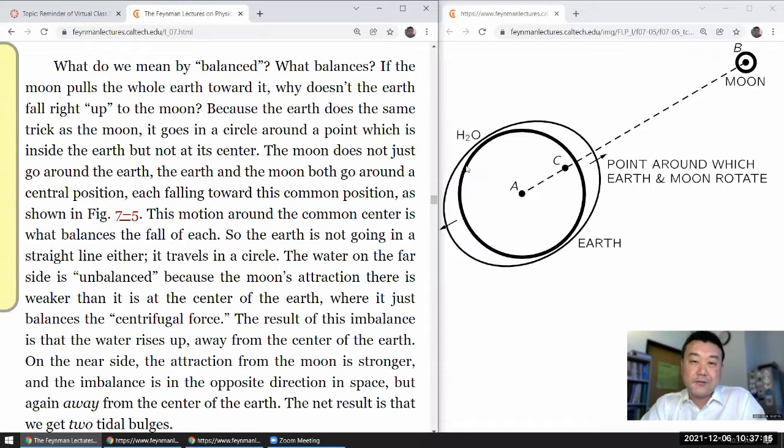Furthermore, the water can flow while the more rigid Earth cannot. The true picture is the combination of these two things. So you have a bulge on the closer side and the farther side. So as the Earth rotates, one cycle every 12 hours or so. What do we mean by balance? What balance is? If the moon pulls the whole Earth toward it, why doesn't the Earth fall right up to the moon, collide with it? Because the Earth does the same trick as the moon, it goes in a circle around the point, which is inside the Earth, but not at its center. The moon does not just go around the Earth. The Earth and the moon both go around the central position, each falling toward this common position as shown in this figure. This is the common point, very center or center of mass or center of weight of Earth and Moon.